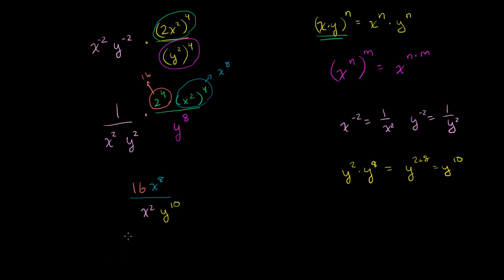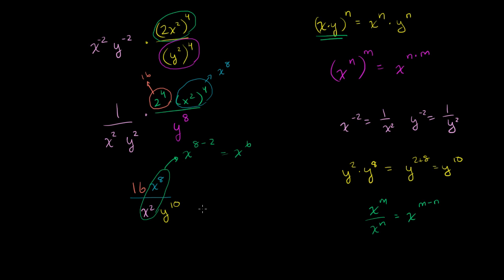And we're almost there — one more thing to simplify. We have x to the eighth over x squared. Using the property x to the m over x to the n equals x to the m minus n, x to the eighth over x squared simplifies to x to the eighth minus 2, or x to the sixth power. So our whole expression has simplified to 16 times x to the sixth, all over y to the tenth power. And we are done.